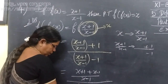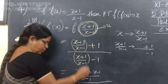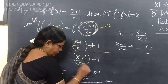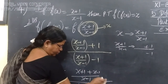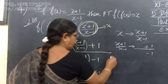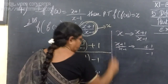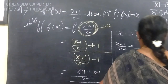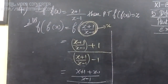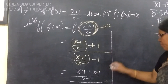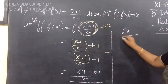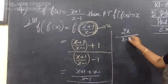x plus 1 by x minus 1. Now cross multiply it, then x will cancel with minus x. So we get 2x by x minus 1.